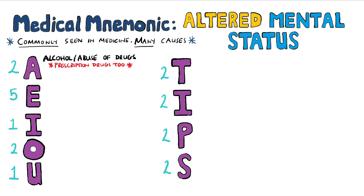A is also for acidosis, which often comes from things like diabetic ketoacidosis and things like hypercapnia, which is an excess of CO2 in the blood, which often comes from COPD, asthma or a neuromuscular disease.